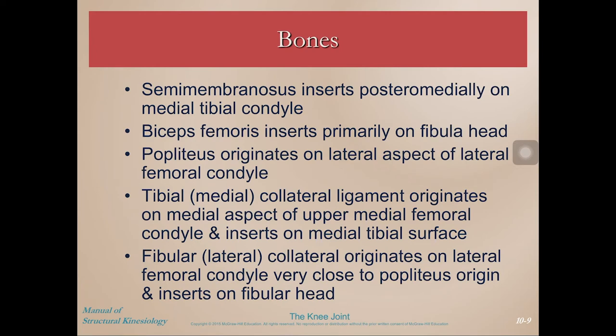Sartorius, gracilis, and semitendinosus insert just below the medial condyle on the upper anteromedial surface of the tibia. Many of these muscles are biarticular — they cross the hip and the knee and have actions at both joints. Semimembranosus inserts posteromedially on the medial tibial condyle, similar to where semitendinosus inserts. Biceps femoris inserts on the lateral side, primarily on the fibula head. Popliteus, a small muscle behind the knee, originates on the lateral aspect of the femoral condyle.